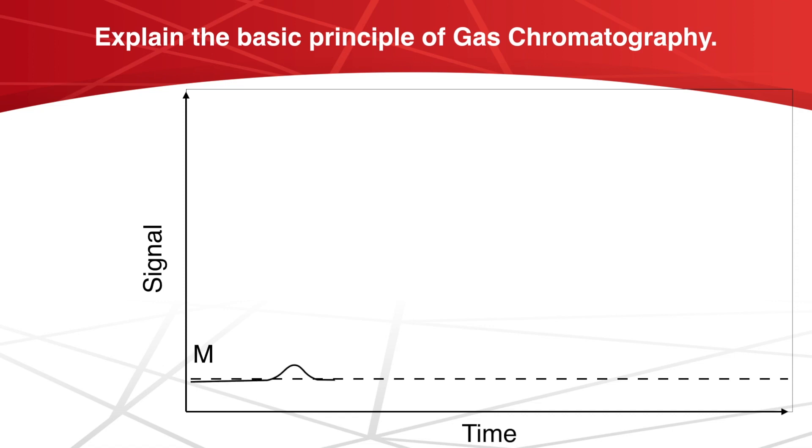At the moment M, the sample is injected into the column. Peak C corresponds to the emergence of C, the most volatile or the least retained component of the mixture.